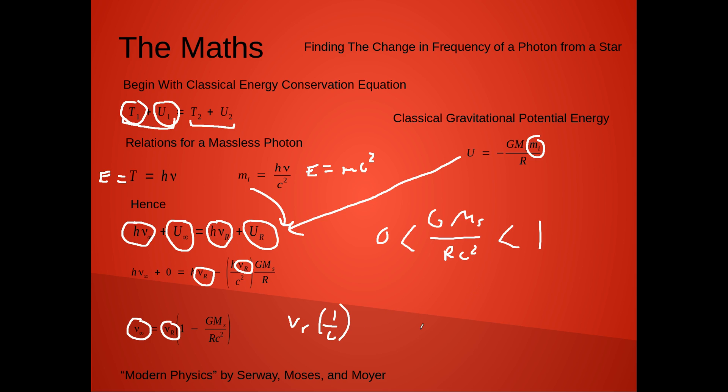it's basically saying that our frequency at the radius of the planet will be multiplied by some fraction, basically less than 1, which means our frequency will decrease at infinity, and thus our wavelength will increase.